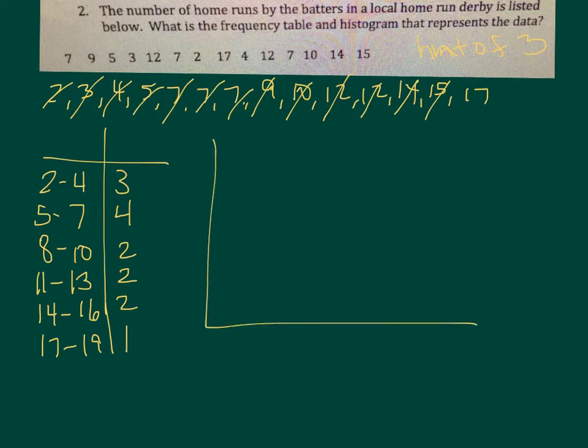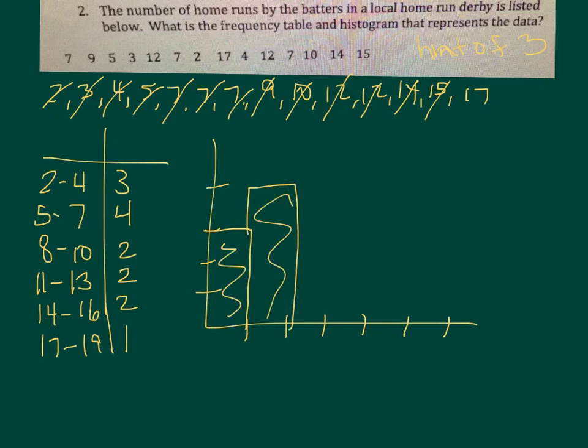Make your L graph. You have 1, 2, 3, 4, 5, 6 intervals. Your highest frequency is 4. Your first interval, 2 to 4, is 3. So you make it a bar up to 3. 5 to 7 is 4. You can color these in if you want. 8 to 10 is 2. 11 to 13 is 2. 14 to 16 is 2. And 17, 19 is 1.